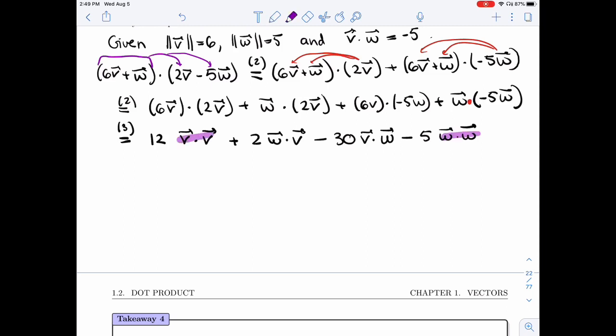All right. Now on this term and on this term, I'm going to use property four. So I'll get 12 length of V squared, and here I'll get minus 5 length of W squared.